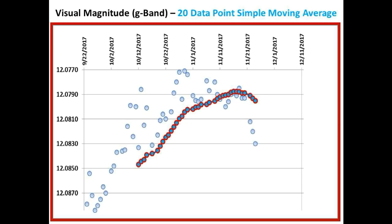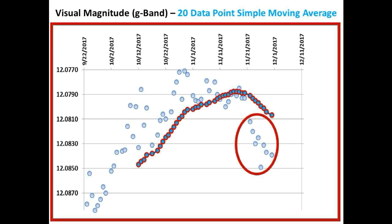This is what the light curve looked like from our last update. We will now move forward in time to take us to our last measurement received, which was on November 30th. Notice that all the last eight measurements are way below the average and seem to be falling out of bed.